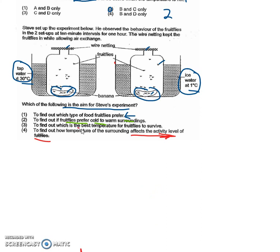The last one: to find out which is the best temperature for the fruit flies to survive. If you find that after a few hours most of the fruit flies are lying on the floor and they are all dead, whereas the other one has a lot of fruit flies still flying around.